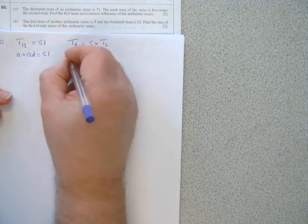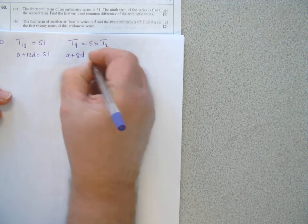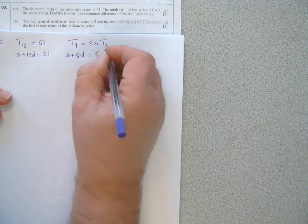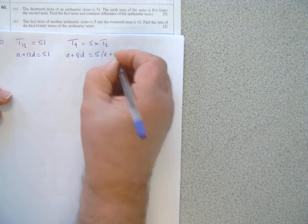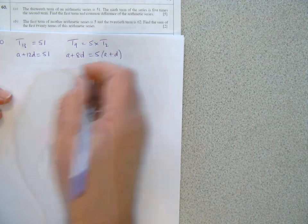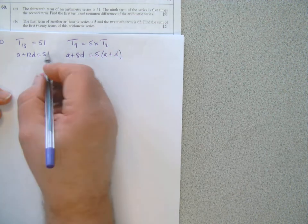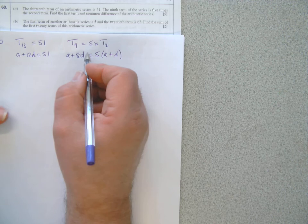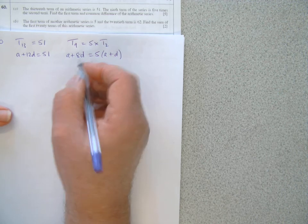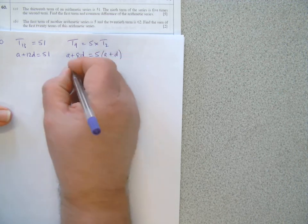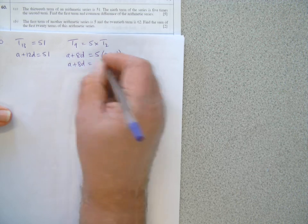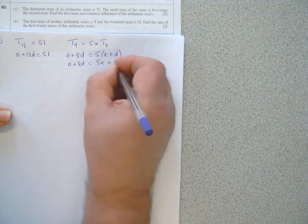So T9, that would be A plus 8D, equals 5 times, and T2 would be A plus 1D, A plus D. So these are my two equations which I need to solve to find A and D. Tidy up the second one, A plus 8D equals 5A plus 5D.